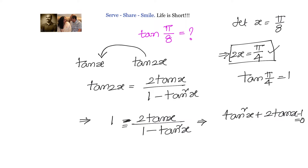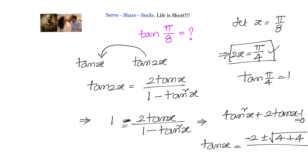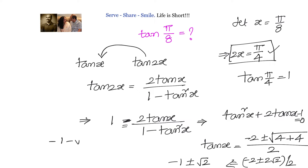Using the quadratic formula: tan(x) = (−b ± √(b²−4ac)) / 2a. Here b = 2, so −b = −2; b² = 4; and −4ac = −4·(1)·(−1) = 4. So tan(x) = (−2 ± √8) / 2 = (−2 ± 2√2) / 2. That gives two options: −1 − √2 or −1 + √2.